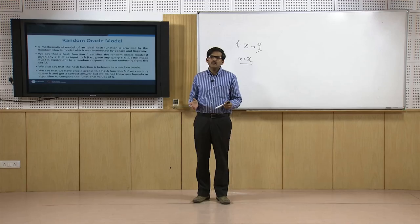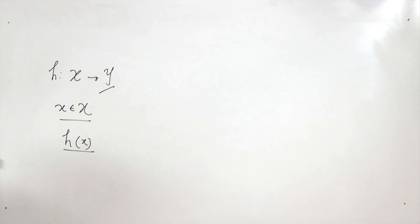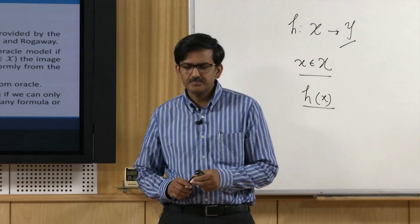Particularly, we assume that we do not have any knowledge about the formula or an algorithm by which h is computing the image value h(x). We also say that the hash function h behaves as a random oracle, or sometimes we say that we have oracle access to a hash function, if we can only query h to get a correct answer, but we do not know any formula or algorithm to compute the functional value of h.